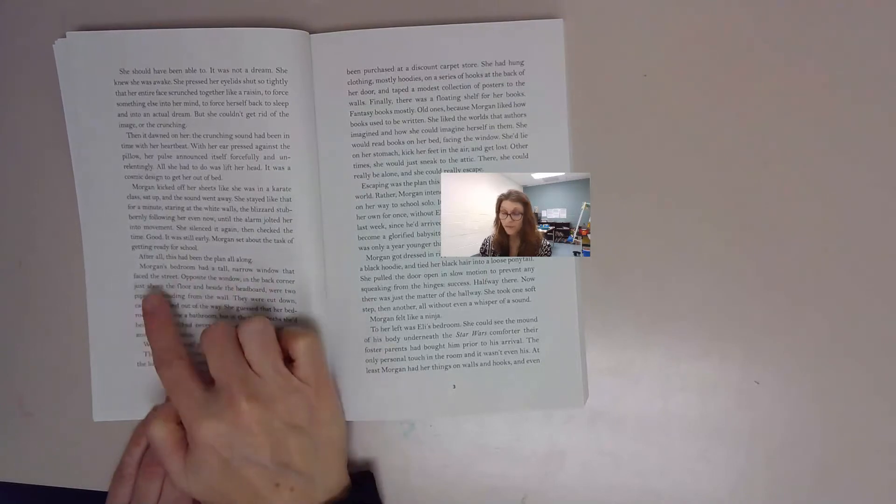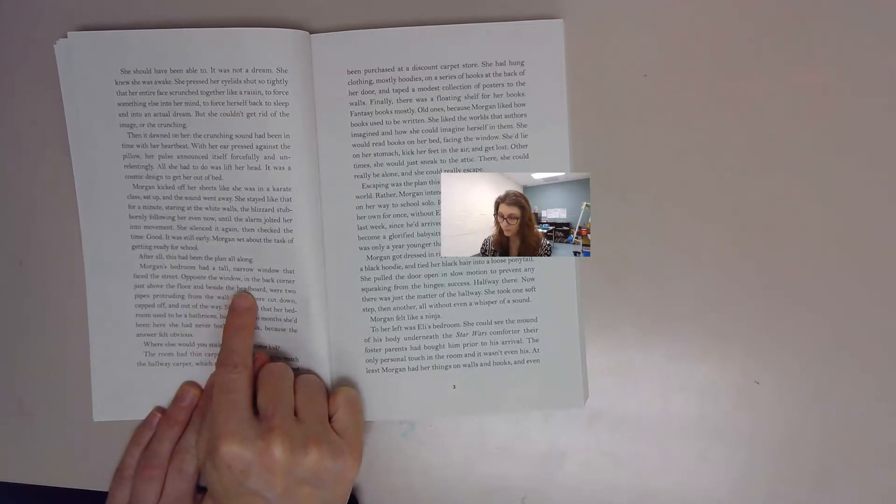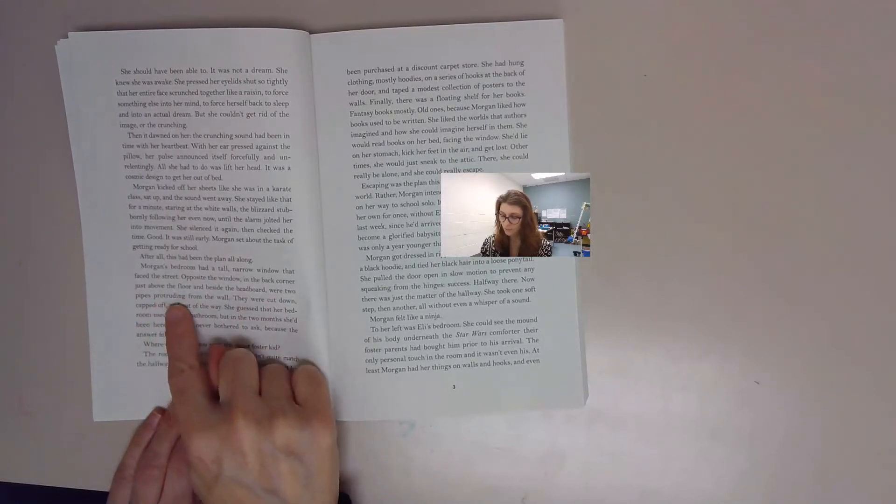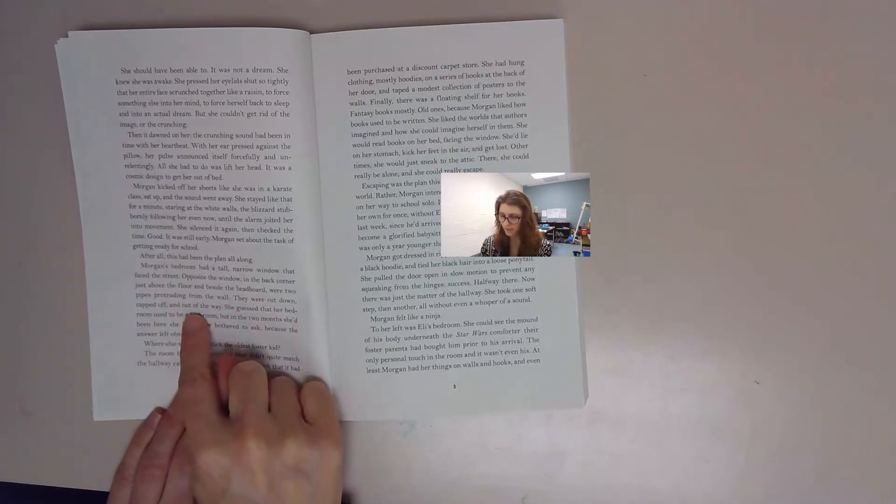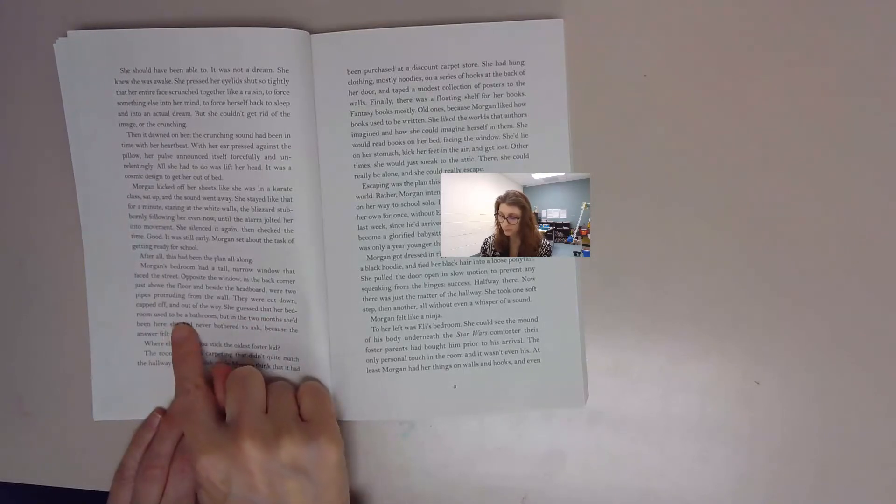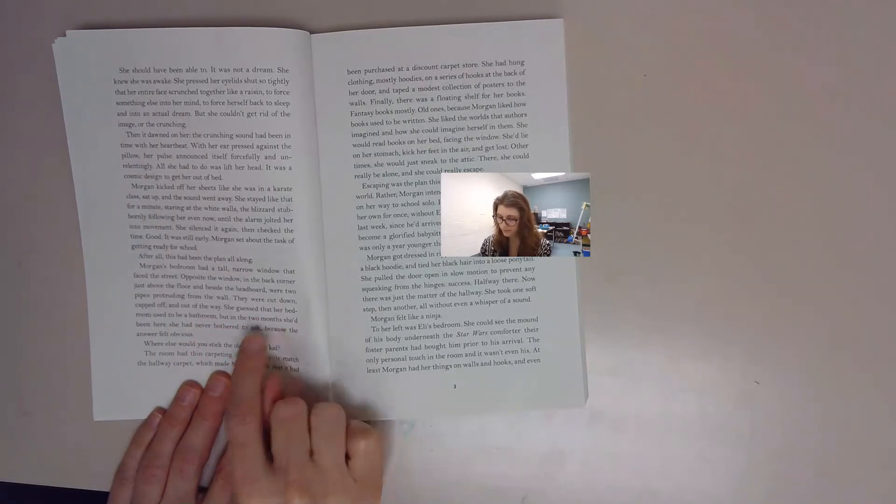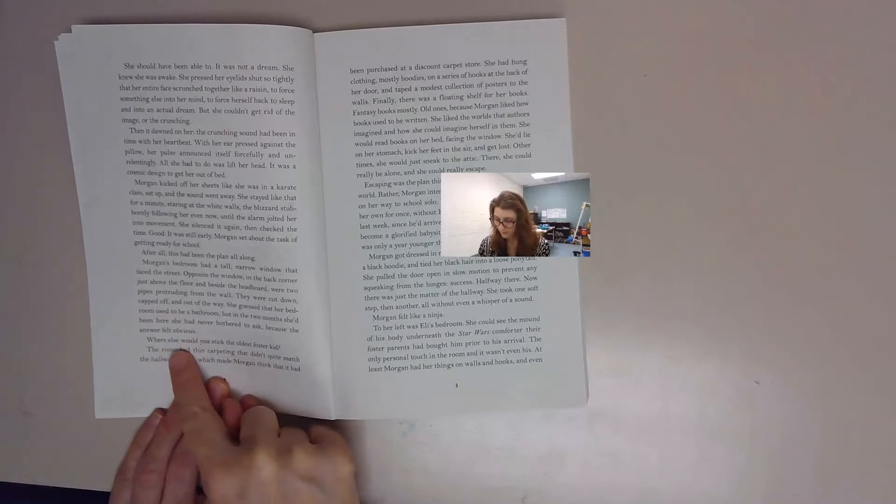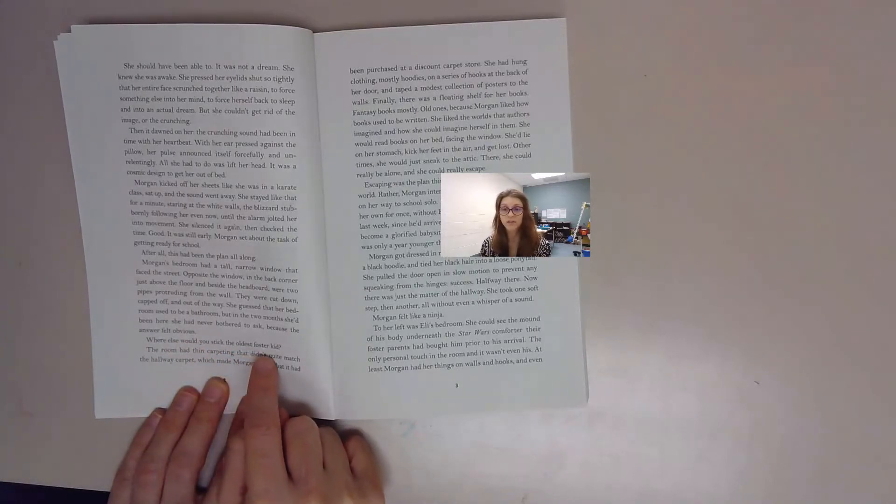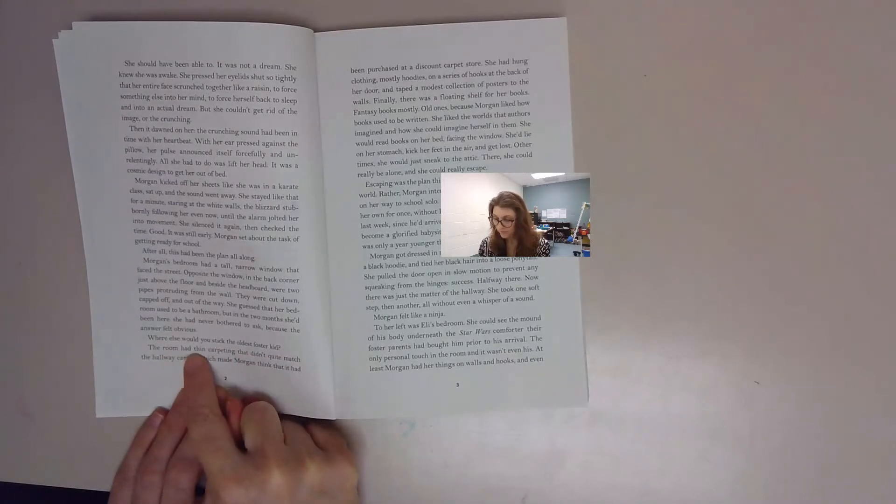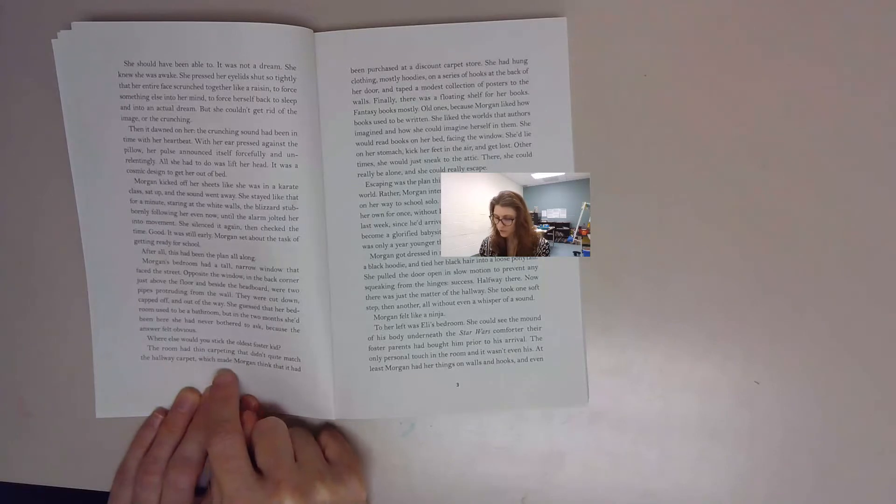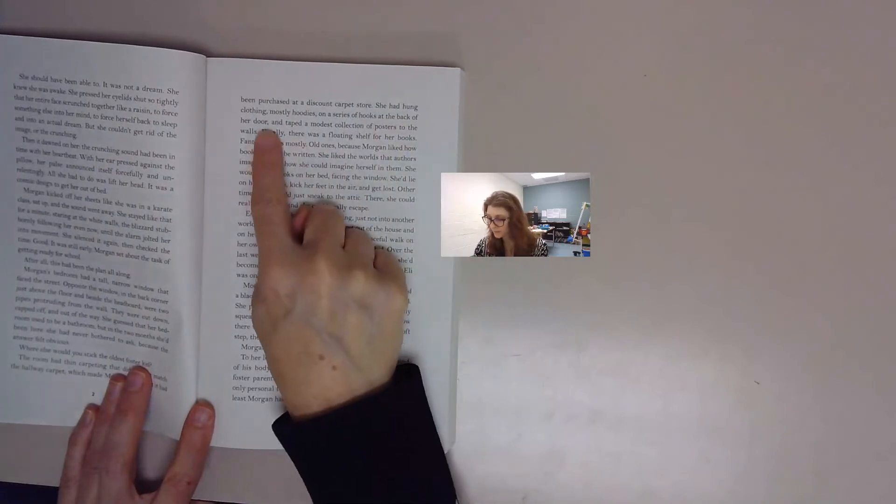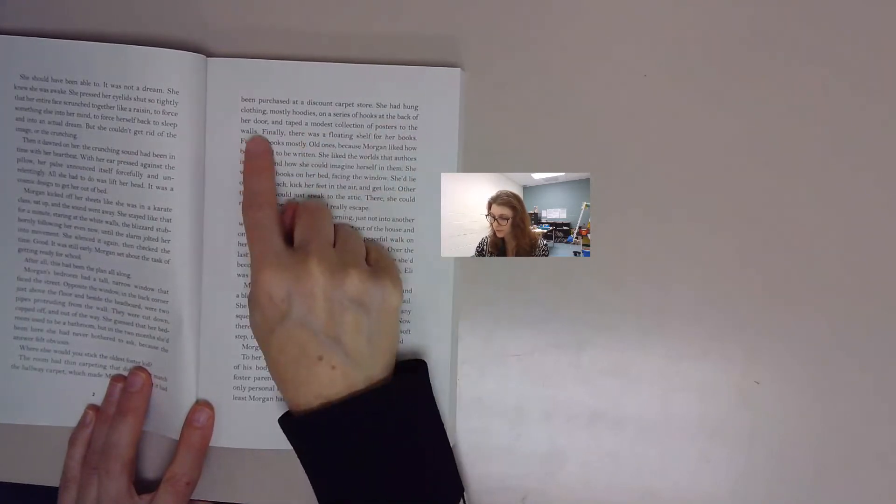Morgan's bedroom had a tall narrow window that faced the street. Opposite the window in the back corner, just above the floor and beside the headboard, were two pipes protruding from the wall. They were cut down, capped off, and out of the way. She guessed that her bedroom used to be a bathroom, but in the two months she'd been here, she'd never bothered to ask because the answer felt obvious. Where else would you stick the oldest foster kid? The room had thin carpeting that didn't quite match the hallway carpet, which made Morgan think it had been purchased at a discount carpet store.